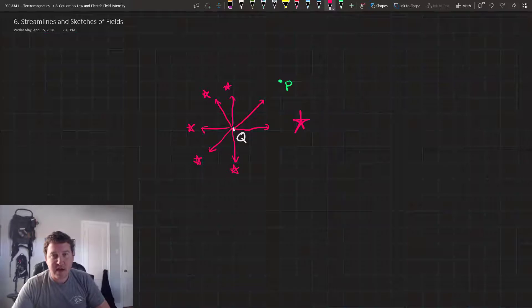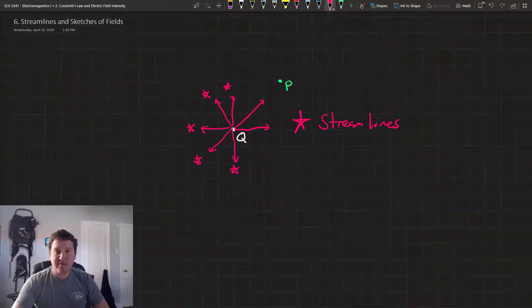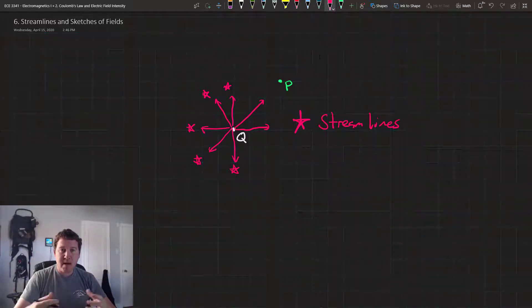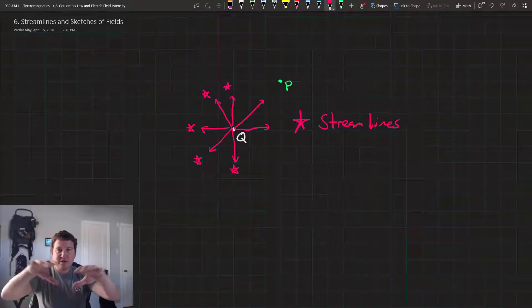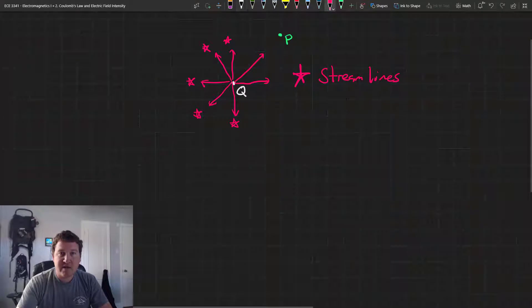Each of these lines emanating from our point charge are called streamlines. And they represent the vectors that emanate out from the charge, the vectors that correspond or make up the electric field. So what we need is an equation for the entire vector field.